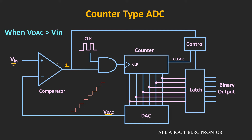As soon as VDAC is greater than the input voltage, the output of the comparator will become low, and no clock pulses will be applied to this counter. So as soon as the output of the comparator becomes low, through this control circuit, the output of the counter will get latched and the counter will get reset. This latched output is directly proportional to the input voltage. After this entire procedure, once again a new conversion will start — the new input value will get sampled and the new conversion will begin.